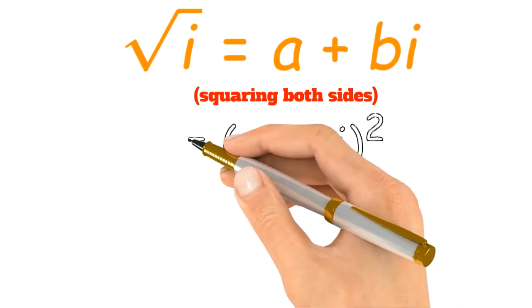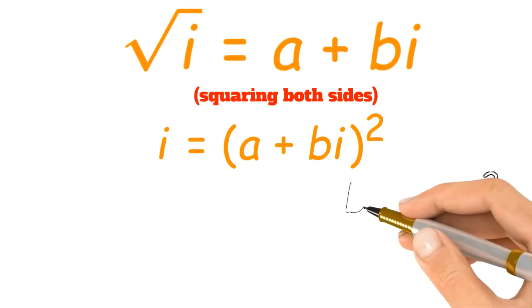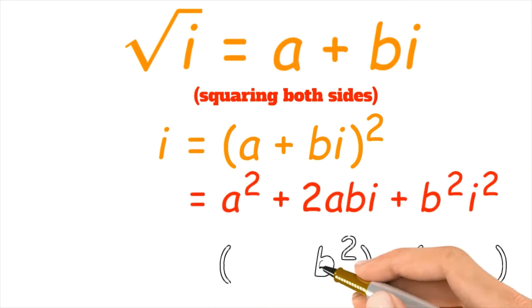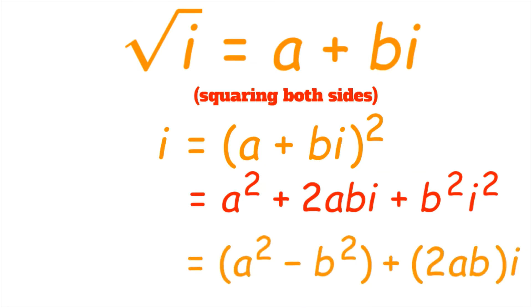Now squaring both sides, we get i equals (a + bi)², which equals a² + 2abi + b²i². This is equal to a² - b² (because i² = -1) plus 2abi.